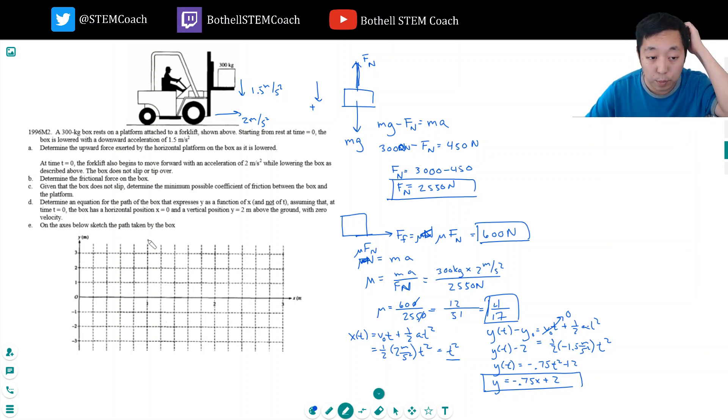And then sketch the path taken by the block. So it starts off here, and then it would hit the ground when x is at like 2 divided by 3 fourths, that's 8 over 3, so that's 2 and 2 thirds, about there. And then it's just a straight line between those two points, because this is just a straight line. This is x and y, it's kind of what we're plotting here.